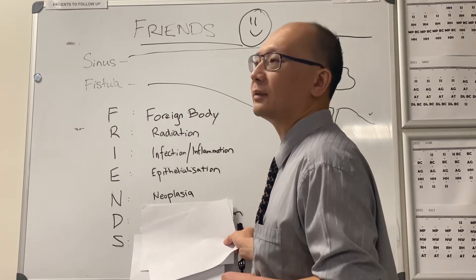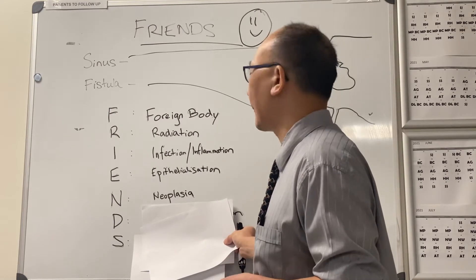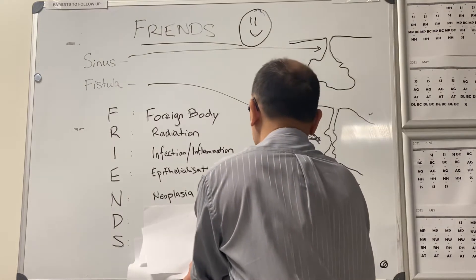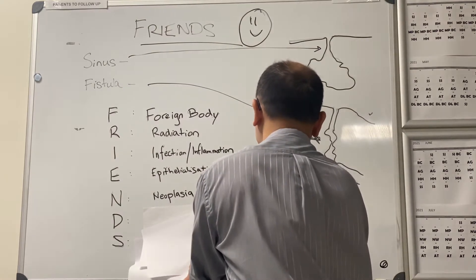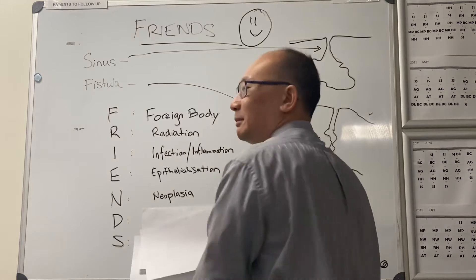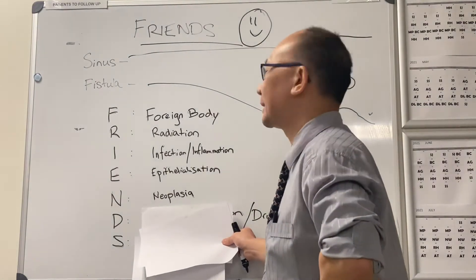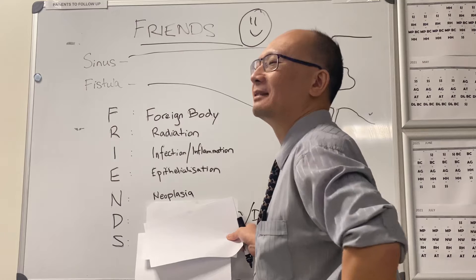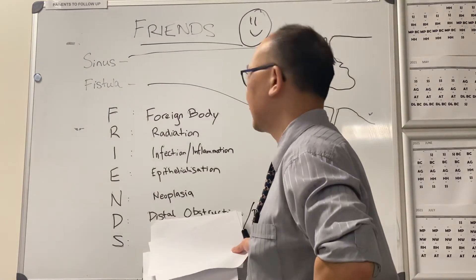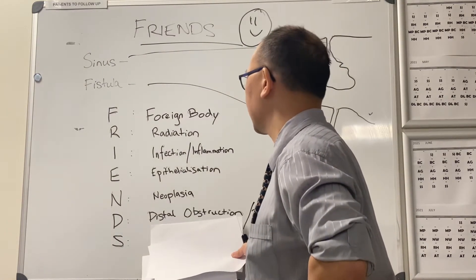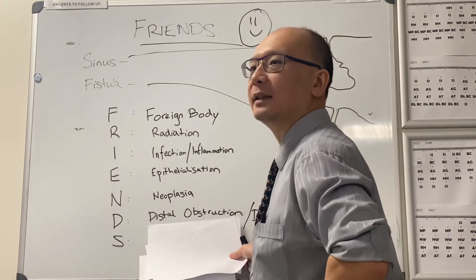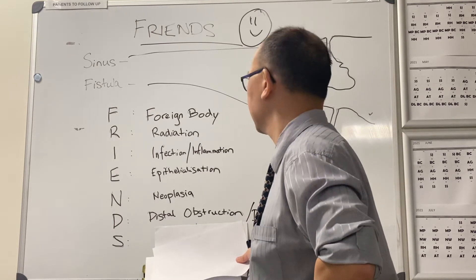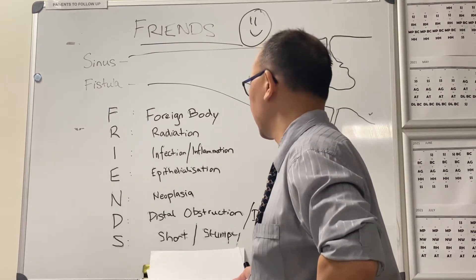Steroids and stuff like that. We've added to it. Good job. Distal obstruction. What was I thinking of? Distort structure. Yeah, distort structure. And S is... Ben. Short and stumpy.